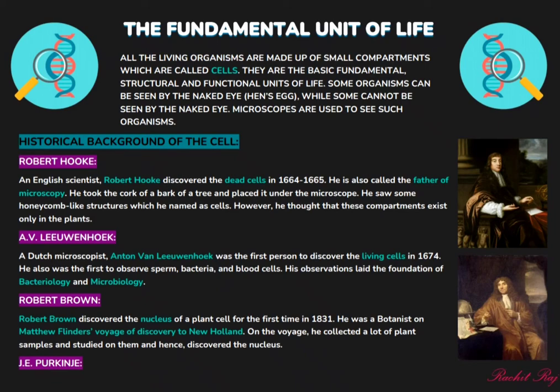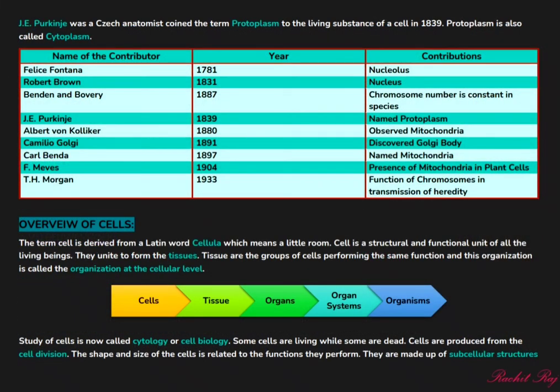The nucleus, which is considered to be the brain of cells, was discovered by Robert Brown in 1831. He was a botanist on Michael Flinders' voyage of discovery to New Holland, where he used to collect a lot of plant samples. He studied them deeply and found the nucleus. J.E. Purkinje was also not left behind — he gave the name to the living substance of a cell, which is protoplasm. The protoplasm can be called cytoplasm; however, they have some minor differences, but they can be used interchangeably.